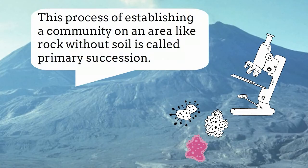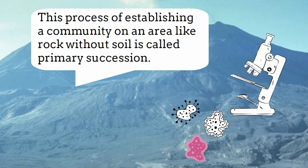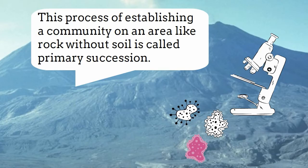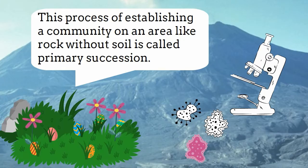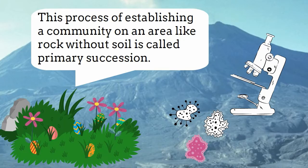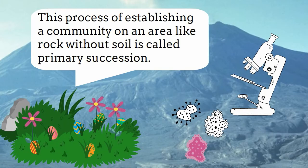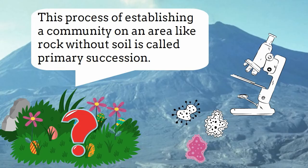This process of establishing a community on an area like rock that does not have soil is called primary succession. Before most plants can grow they need soil. But how is this soil created?